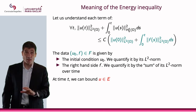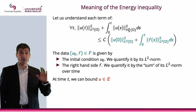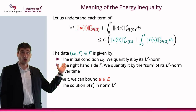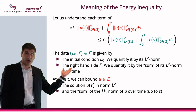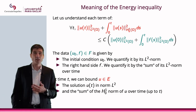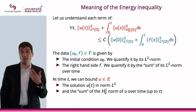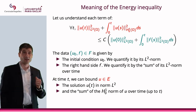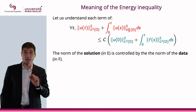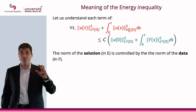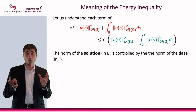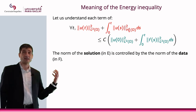At time T, we can bound U in E. That's the left-hand side: we have the solution in norm L², and also the sum of the H¹₀ norms — the integral of U over time up to T. What we're really saying is that the norm of the solution in E, the space of the solution, is completely controlled by the norm of the data in F.